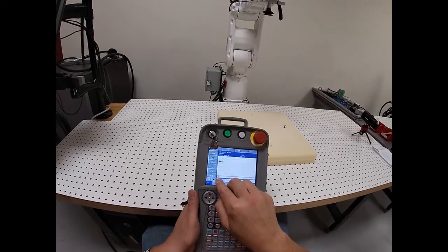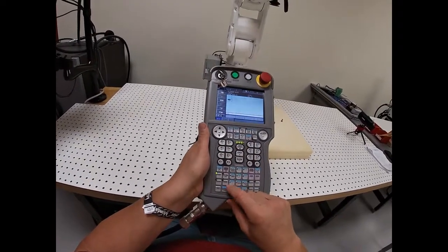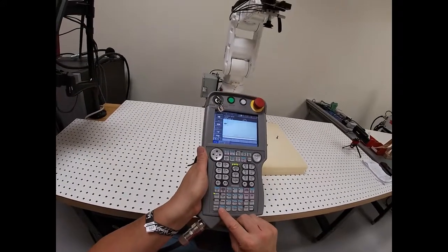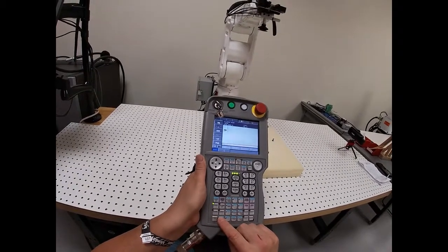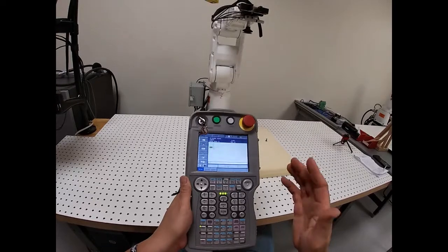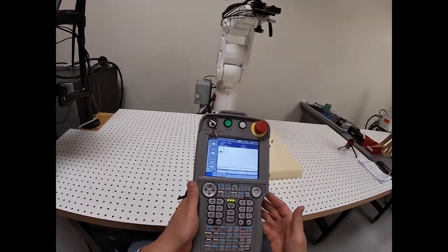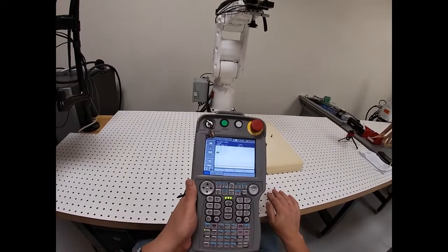The default move command is move L. That's what's showing. I want to fix that by hitting the motion type button at the bottom here. Move C, I don't want that. Move S, I don't want that. Move J. So back around to move J. It's using the same default speed I used before. That's great. So now I just have to hit enter. And I've entered in move J.